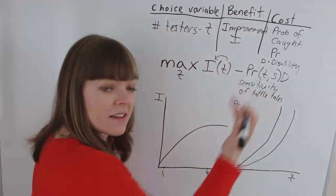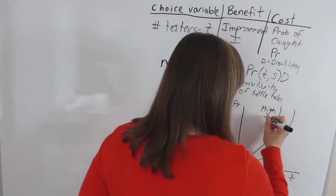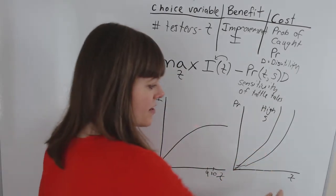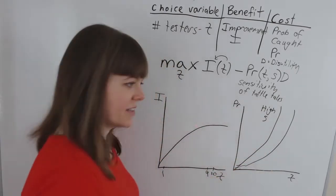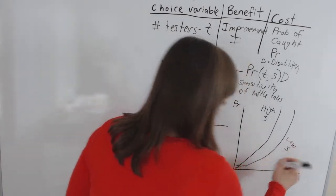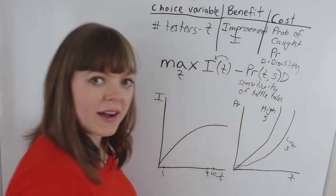So highly sensitive tattletales will lead to a higher probability of getting caught at any given number of test takers, any fixed number of test takers. And if there's a low sensitivity of tattletales, that could rotate this graph way down.